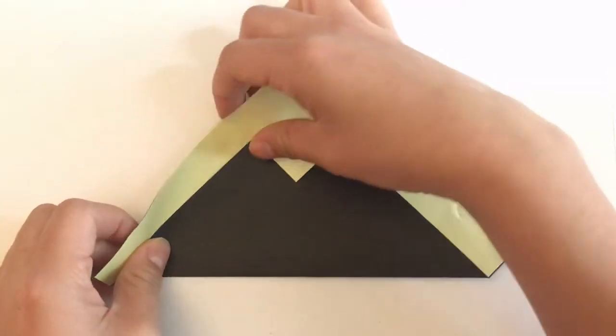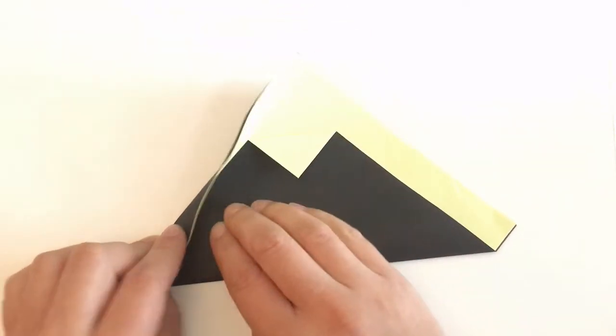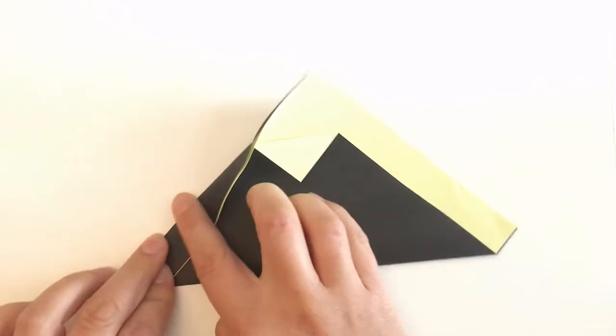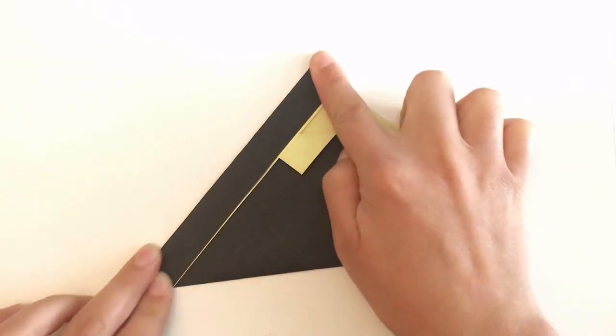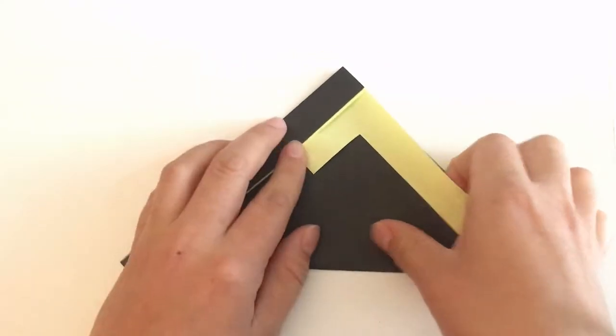Then fold one side of the tan paper over all the way. Then pick up the other side and do the same.